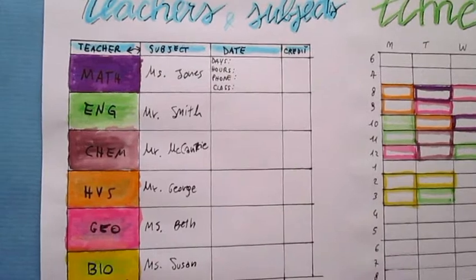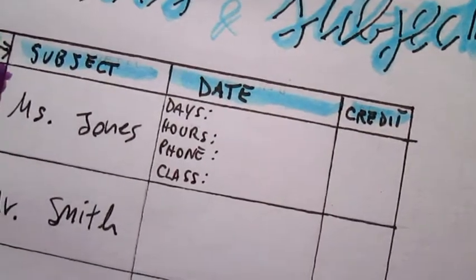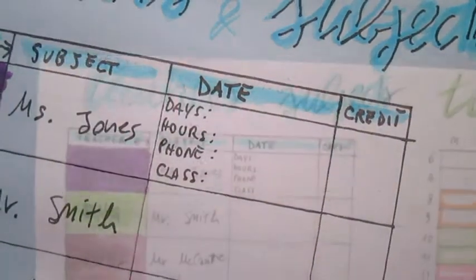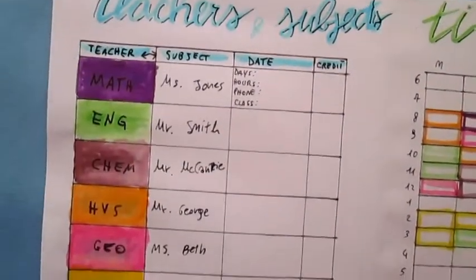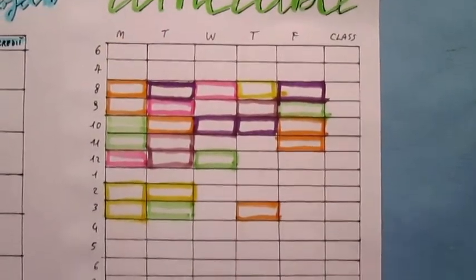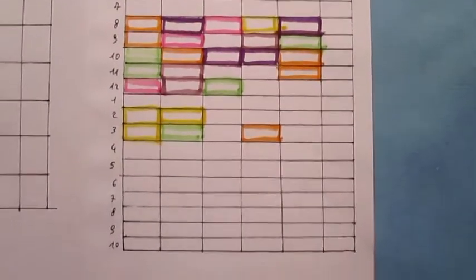In the next page I did a timetable. I wrote outside the table the hours from 6am to 10pm because it's the typical day of a student's life, and then I wrote the days of the week from Monday to Friday, then I colored every rectangle with the corresponding subject.